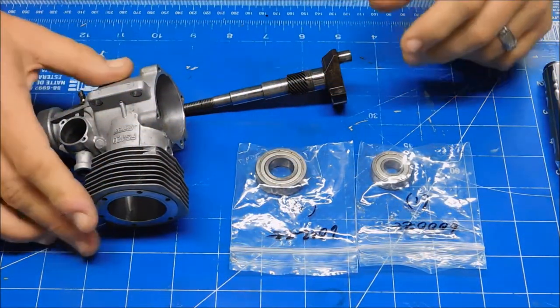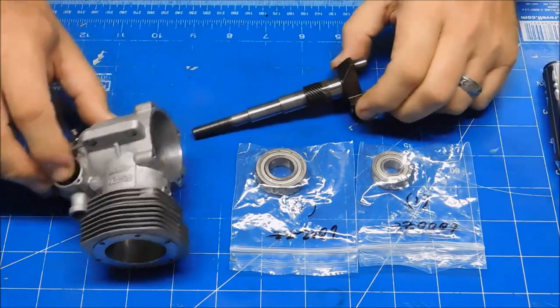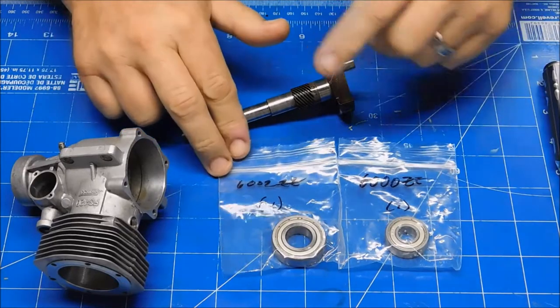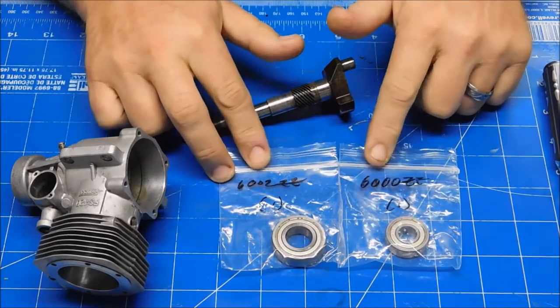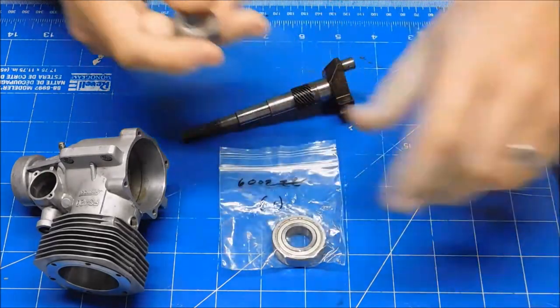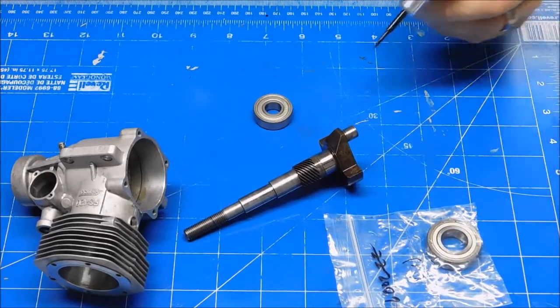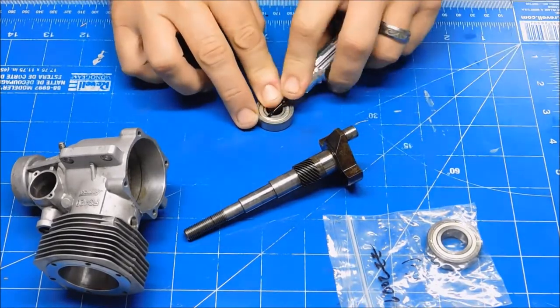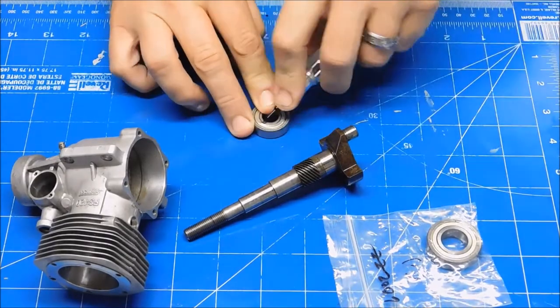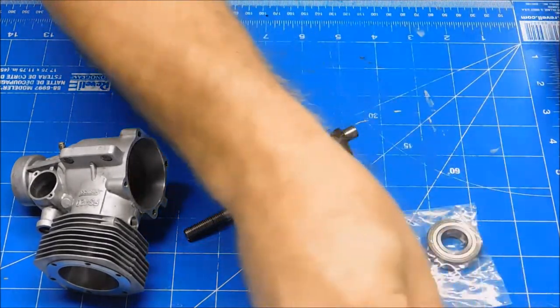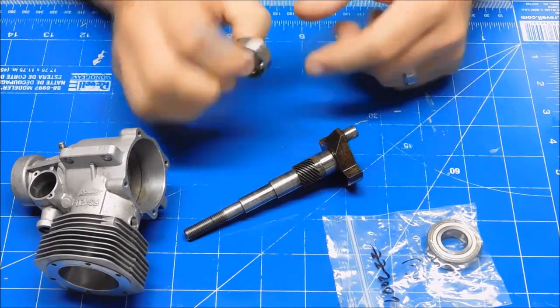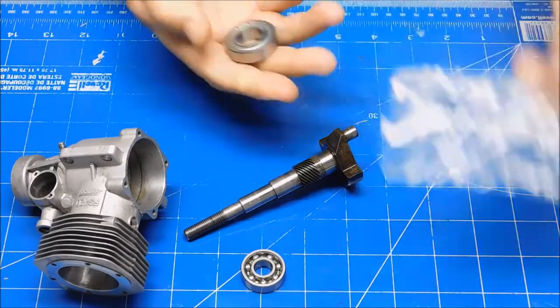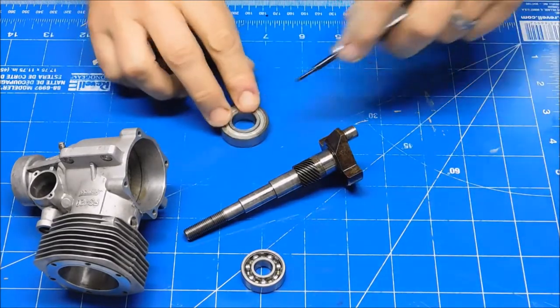Well, these bearings for this OS FS 120 Surpass arrived yesterday, so now the process to start rebuilding this engine with the right bearings. Here's the 6002 and 6000. Obviously this will be the front bearing, so we'll get to removing one of these shields. Shield removed.